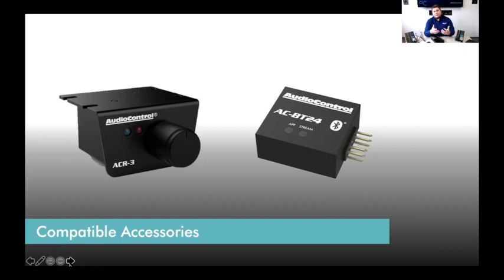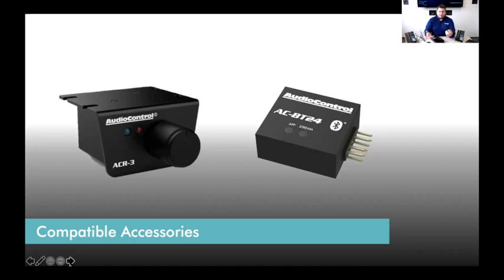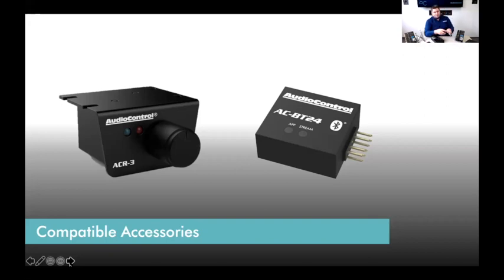The ACR3 dash remote control is really well made — metal housing, a nice feel when you turn it. A lot of dash remotes out there are flimsy and plastic, but these have real build quality. We also designed them with the installer in mind: two Phillips screws on the bottom let you disassemble the whole assembly. The main stock of the knob is threaded far enough to flush-mount in a console or dash panel, and the LED can also be flush mounted.